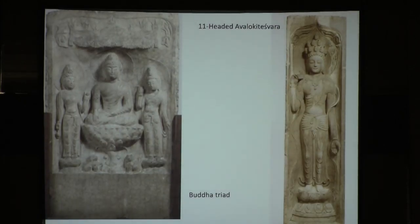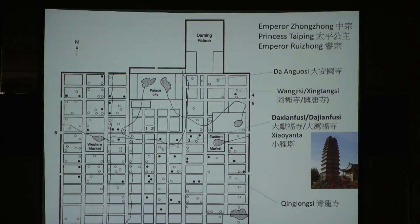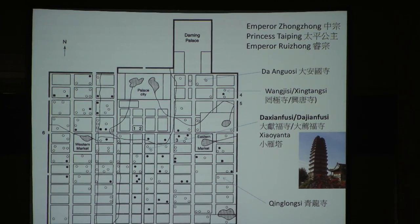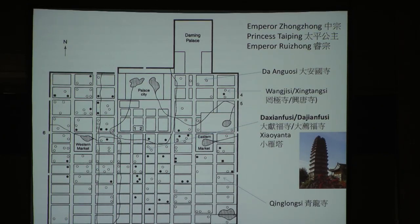Her son Zhong Zhong and several other members of the imperial family continued to build many monasteries. One of them was the Dajianfusi. The 43-meter tall Small Wild Goose Pagoda is still a landmark in Chang'an today. There were numerous other monasteries and nunneries built, lavishly decorated by famous painters and sculptors of the day. Unfortunately, almost all of them—along with those at Luoyang—have been destroyed, and we only have very scarce archaeological remains from the sites.